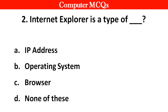Next question: Internet Explorer is a type of — Options: A. IP address, B. Operating systems, C. Browsers, D. None of these. Right answer is option C — Browser.